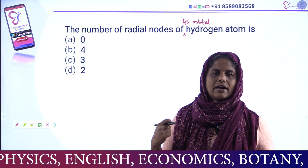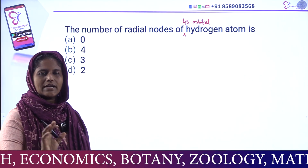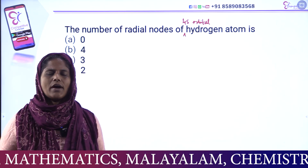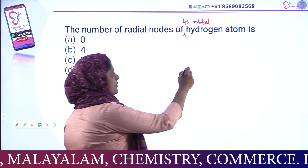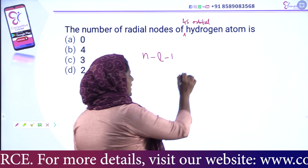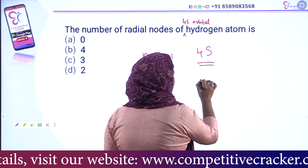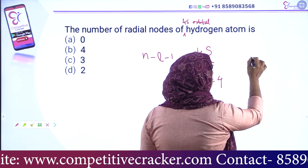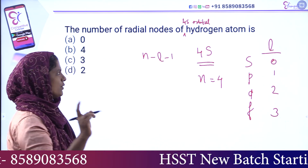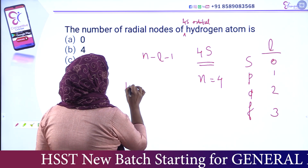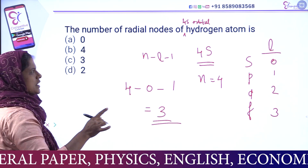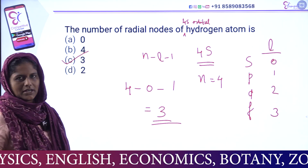This is a topic about quantum chemistry — a simple question about quantum numbers. From last year, there is a question about the number of radial nodes of the 4f orbital of the hydrogen atom. The formula for radial nodes is n minus L minus 1. For the 4f orbital, n equals 4, L equals 3, so the answer is 3.